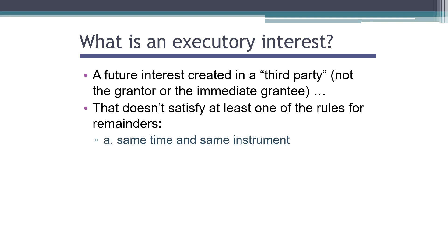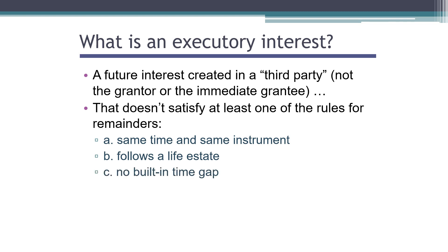What are the rules? It's got to be created at the same time and by the same instrument as the prior estate. Usually executory interests do meet that rule. Second, it's got to follow a life estate. Third, there mustn't be a built-in time gap between the end of the present estate and the beginning of possession under the future estate. And finally, a remainder is not allowed to cut short the prior estate, usually a life estate. So if we have a remainder, it's got to satisfy all of these rules, and if it breaks even one of them and it's created in someone other than the grantor, it can't be a remainder and therefore must be an executory interest.